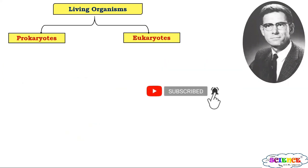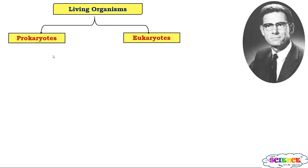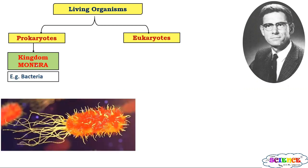It was found that all prokaryotes were unicellular, so they were grouped in one kingdom called Kingdom Monera. The first kingdom is Kingdom Monera, which includes all unicellular and prokaryotic organisms such as bacteria. All bacteria are included in Kingdom Monera. If you talk about the mode of nutrition, bacteria may be autotrophic or heterotrophic — if chlorophyll is present they perform photosynthesis; if absent, they show a heterotrophic mode of nutrition.